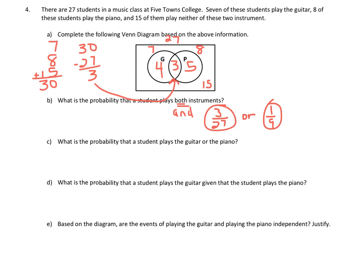Part C asks for the probability that a student plays guitar or piano. The OR is the sum of the three numbers within the circles: 4 + 3 + 5 = 12. So the probability is 12 out of 27, which simplifies to 4/9.